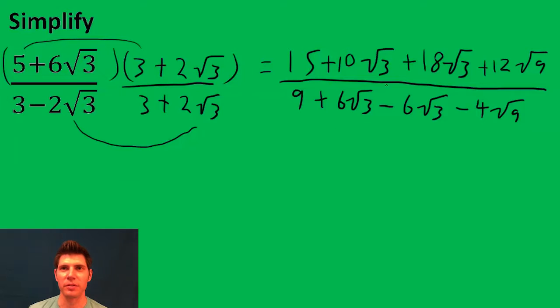Now we can simplify. This root 9 here is a 3. This root 9 is a 3. 12 times 3 is 36. 36 plus 15 is 51 plus, and then 10 root 3 plus 18 root 3 is 28 root 3. That's the top.